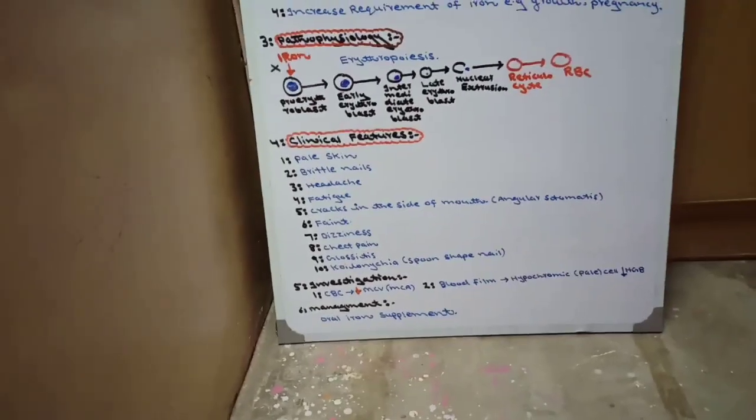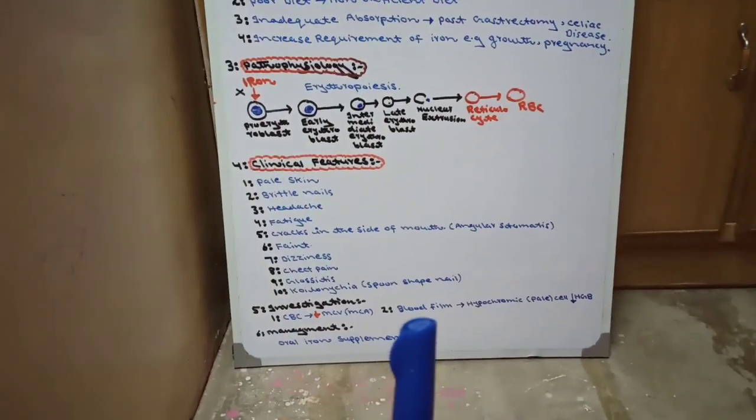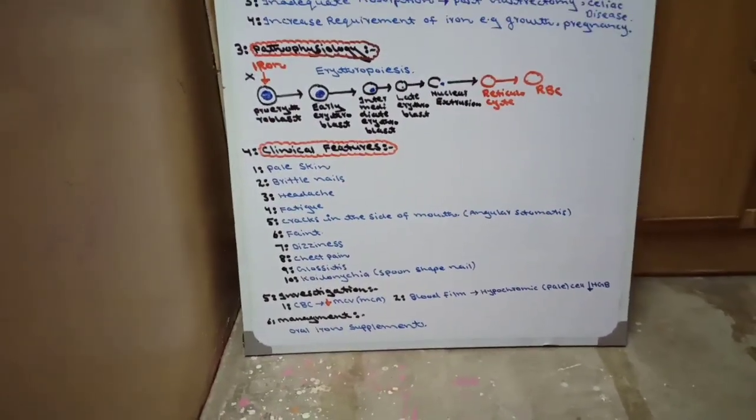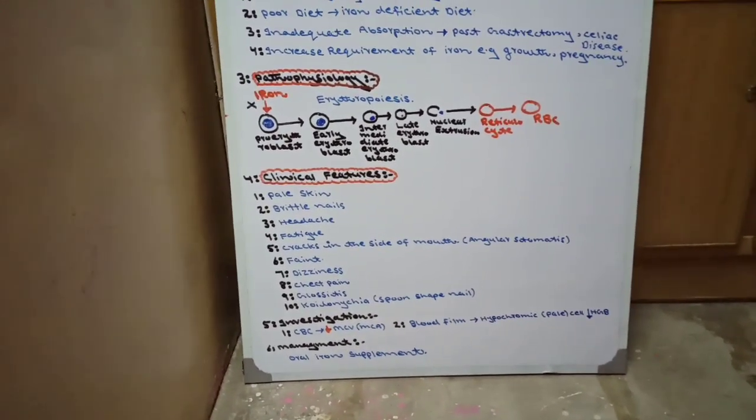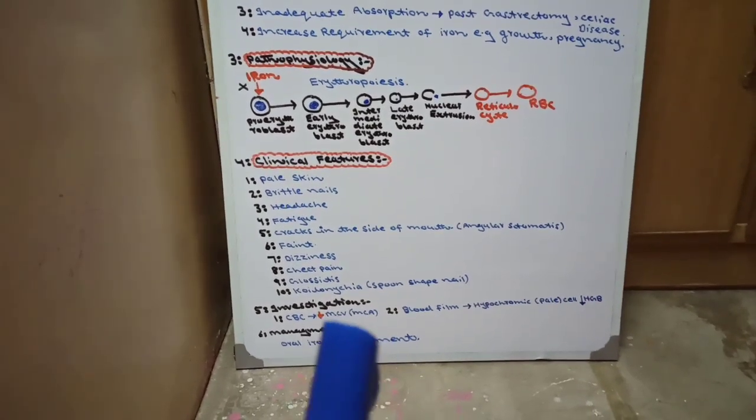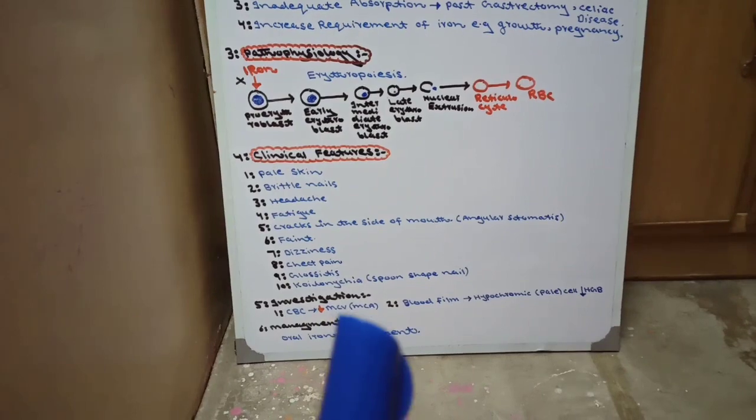For investigations we basically do two tests for iron deficiency anemia. Number one is CBC. When we do CBC, the platelet count will be normal and WBC will be normal, but the mean corpuscular volume (MCV) of RBC will be small — less than 83 fl — which shows microcytic anemia.